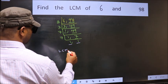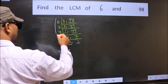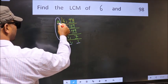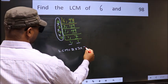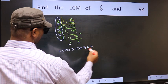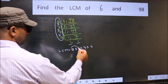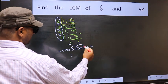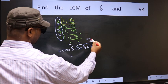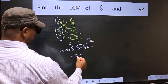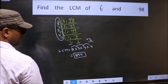So our LCM is, LCM is the product of these numbers. That is 2 into 3 into 7 into 7 into 7. So let us multiply these numbers. 2 into 3 is 6, into 7, 42, into 7. 7 into 2, 14, 7 fours 28 plus 1, 29. So 294 is our LCM.